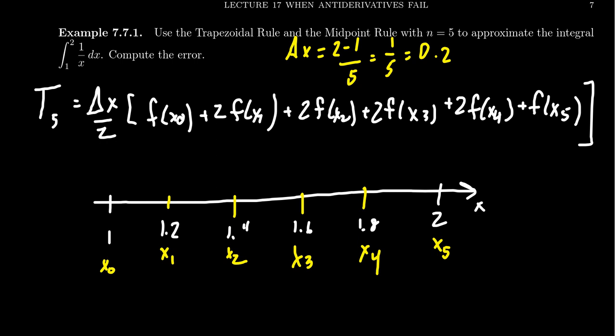And so putting these all in here we're going to take 0.2 divided by 2. That's the first part, don't forget to divide by 2. Then we need to take the function in here. Our function f of x is the reciprocal function 1 over x, the function we are integrating.